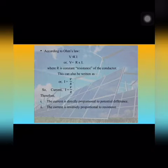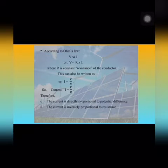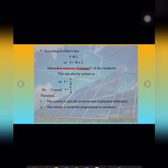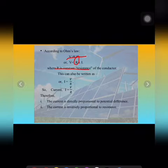According to Ohm's law, potential difference is directly proportional to current, or we can say V equals R into I, where R is a constant called the resistance of the conductor. When we remove the proportionality sign, we get the constant R, and the name of this constant is resistance.